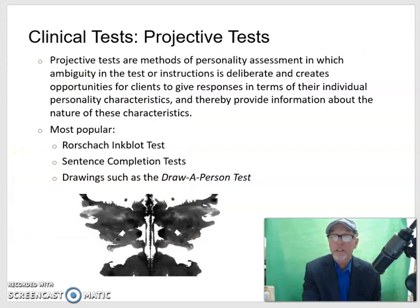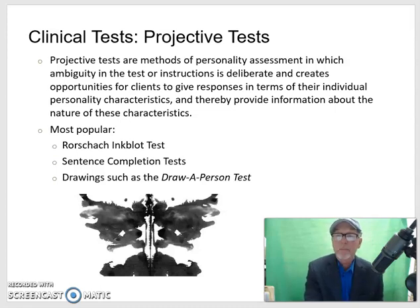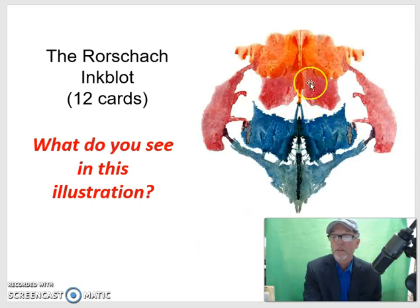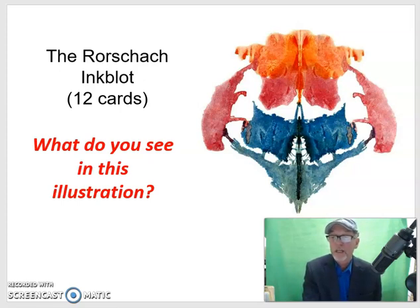One type of clinical test is projective tests. These are methods of personality assessment in which deliberate ambiguity in the test or instructions creates opportunities for clients to give responses in terms of their individual personality characteristics, and then afterwards provide information about the nature of these characteristics. The most popular projective tests are Rorschach inkblots, sentence completion, and drawings such as the draw-a-person test. There are 12 cards in the Rorschach test, and it's very abstract and deliberately ambiguous so the patient can project thoughts, feelings, fantasies, and emotional conflicts onto the drawing. So what do you see in this illustration? There's no right and wrong — it's just what occurs to you when you develop a story to describe it.